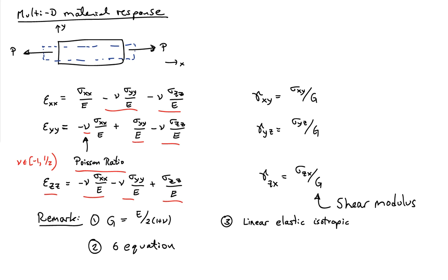Just as a quick remark, G is actually not an independent material property. You can relate it to the Young's modulus. It happens to have this relationship here. It's E divided by 2, 1 plus nu. And we'll actually prove that a little bit later.